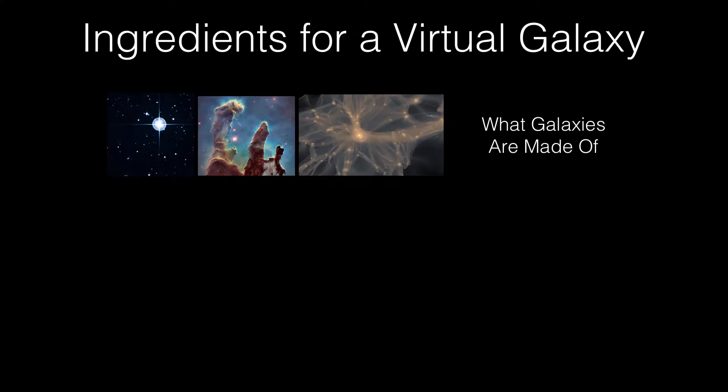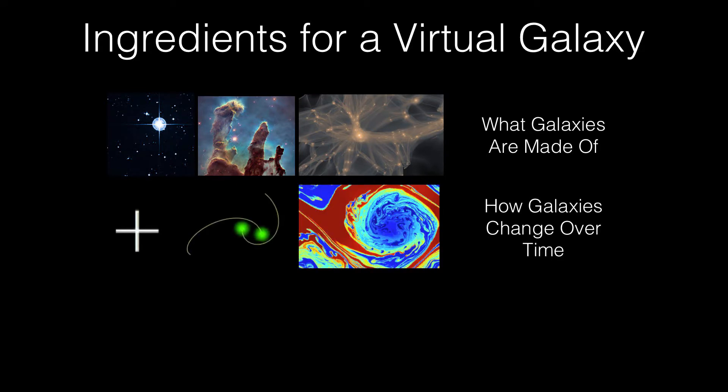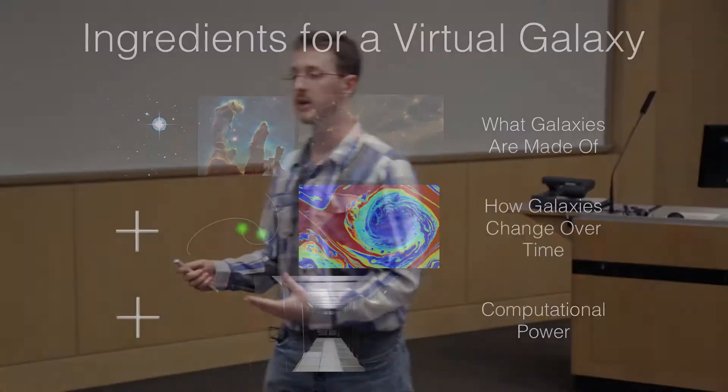Let's review. The ingredients of a virtual galaxy, or a real galaxy, are what it's made of: gas, stars, and dark matter. How it changes over time: gravity, hydrodynamics, and a few other details. And finally, we also need information about how to compute all this. So we need to use computing clusters.